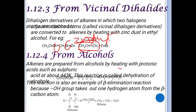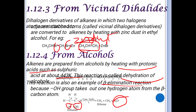Alkenes can also be prepared from alcohols by heating with a protic acid such as sulfuric acid. This reaction is called dehydration of alcohols because water is removed. It is also known as a beta elimination reaction, because the hydrogen from the beta carbon and the OH from the alpha carbon are removed, shifting the bond to form the double bond.